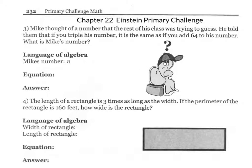In this problem, you have two ways of expressing the quantity. If you triple the number, we take Mike's number times three (3 times n), and that's the same as taking the number and adding 64.